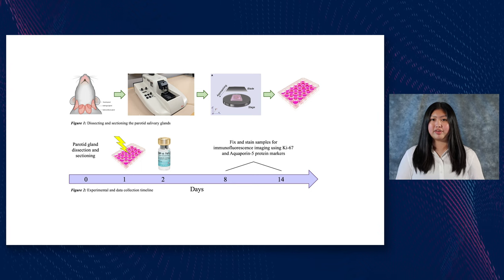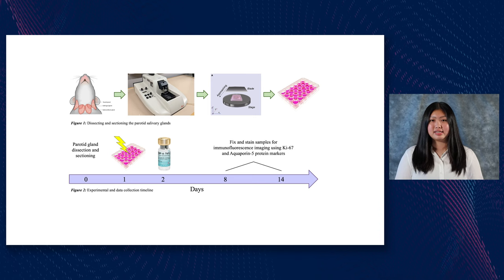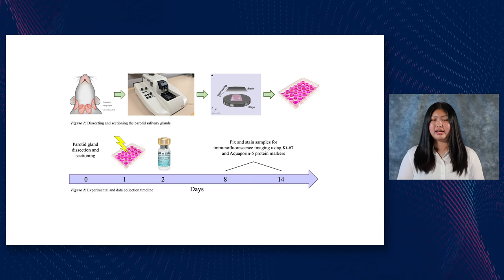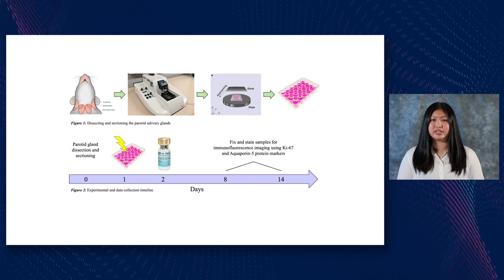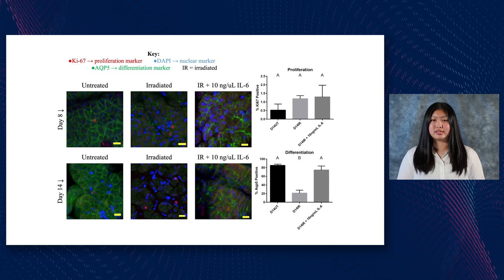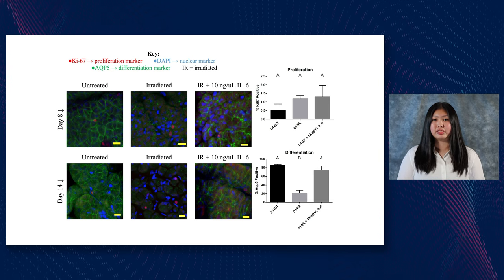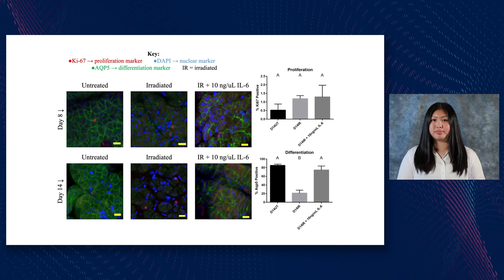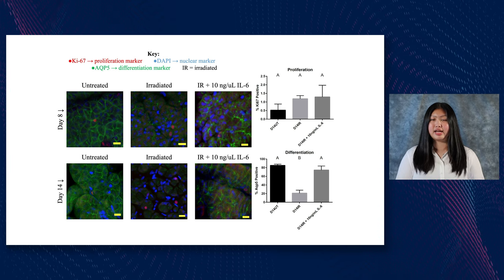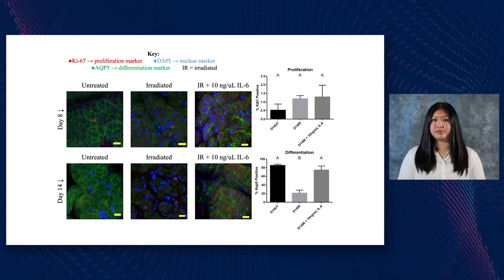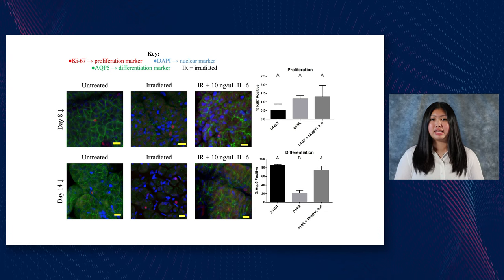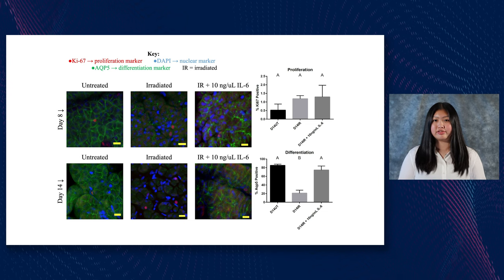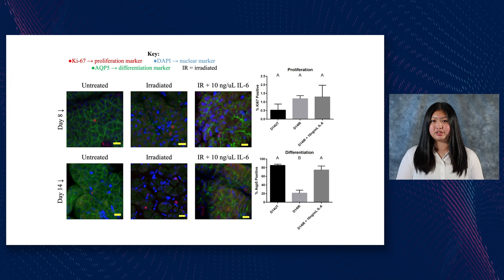We dissected and sliced mouse parotid salivary glands — the most radiosensitive type — irradiated the samples, added IL-6 a day later, and employed immunofluorescent staining and imaging to visualize any changes in cell proliferation and differentiation. Our results partially supported our hypothesis, showing a statistical difference in differentiation but not proliferation after IL-6 addition, indicated by a 60% increase in differentiation. In conclusion, adding IL-6 to irradiated salivary gland tissue cultures increased differentiation, which is directly correlated with better glandular function. Future research will explore the impact of different immune cells on the wound healing response. Thank you.